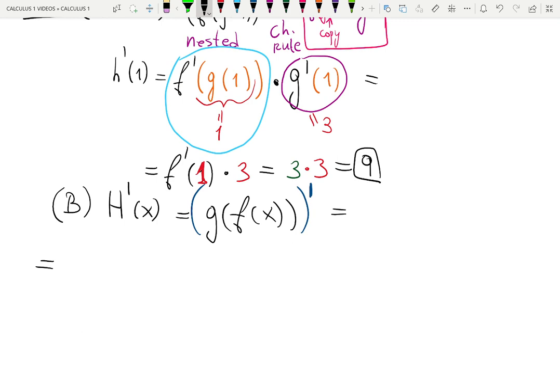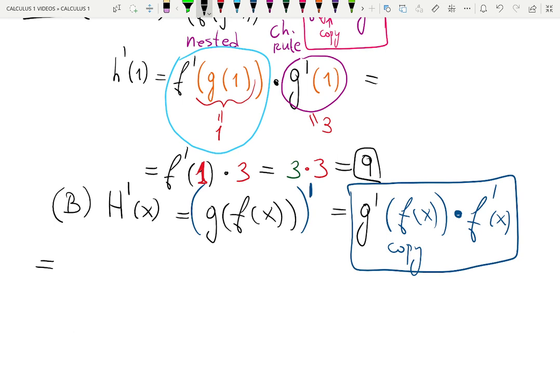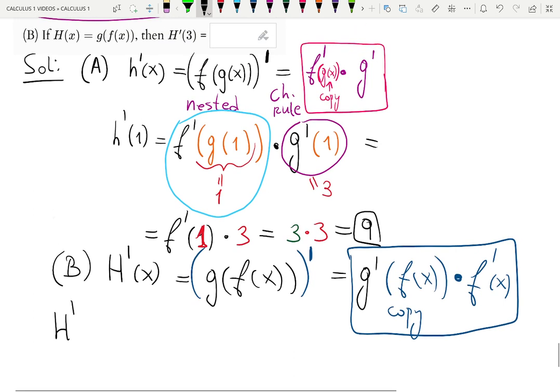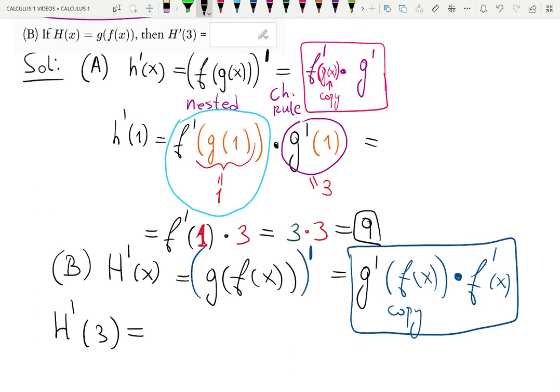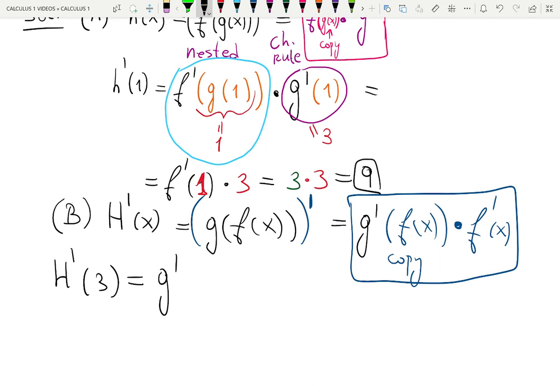They basically switch the order of the nesting. Now f is inside of g. Thus, derivative of the function outside will be now derivative of g. Taking at f of x. Remember, copy the function inside. And then you do times the derivative of the function inside. That is the answer before we substitute values. Now, let's find h prime at the given value, 3. So let me rewrite everything carefully.